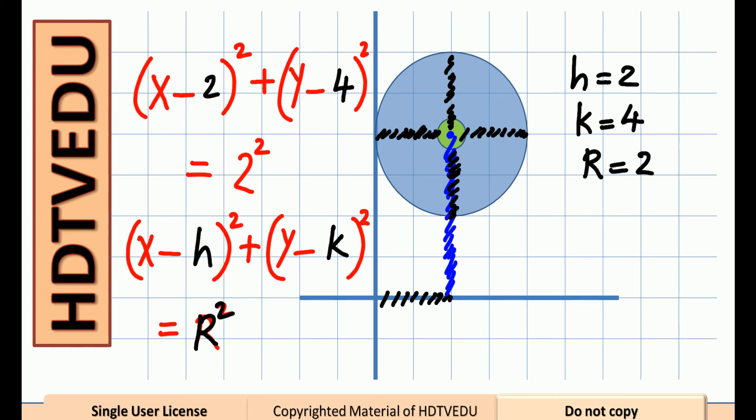How many x intercepts? Where does the graph touch the x-axis? No x-axis? No x-intercepts. The circle does not touch the x-axis.